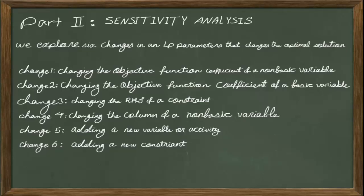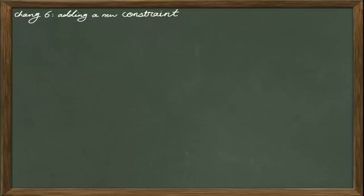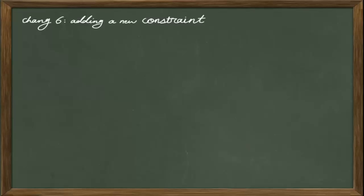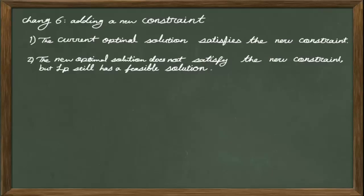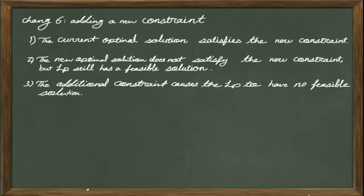In this lesson we are going to explore change 6, which is adding a new constraint in your problem. Three things might happen when a new constraint is added to a linear programming problem. The first condition is that the current optimal solution satisfies the new constraint. The second condition is that the new optimal solution does not satisfy the new constraint but the LP still has a feasible solution. The third condition is that the additional constraint causes the LP to have no feasible solution.